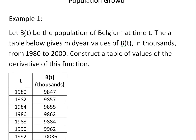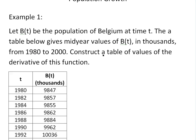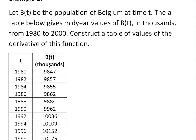This example states: let B of T be the population of Belgium at time t. The table below gives mid-year values of B of T — population in thousands — from 1980 to 2000. Basically the question asks us to construct a table of values of the derivative of this function.